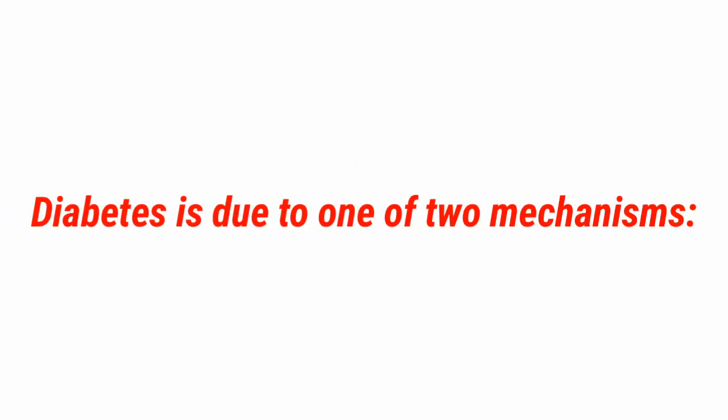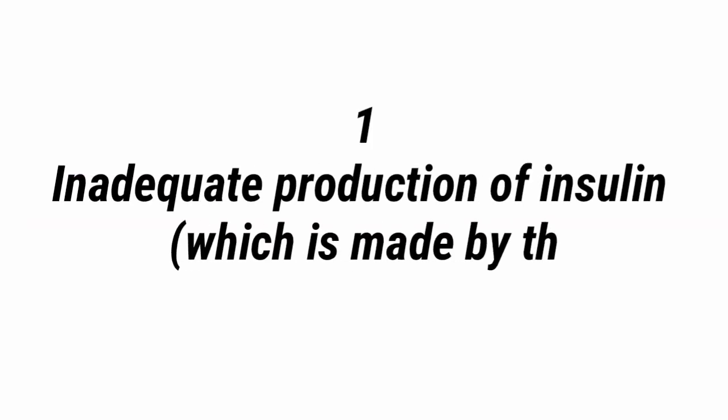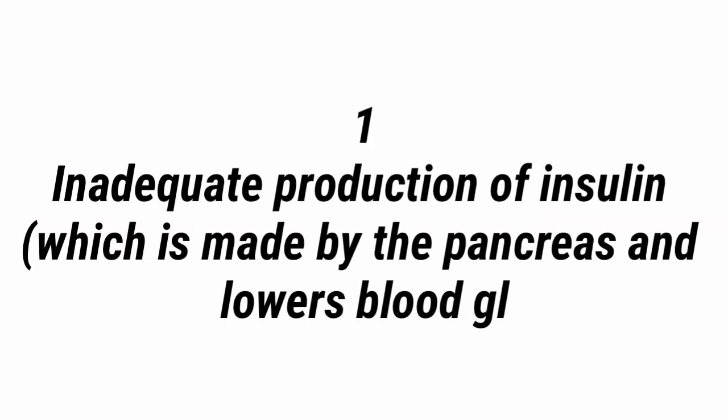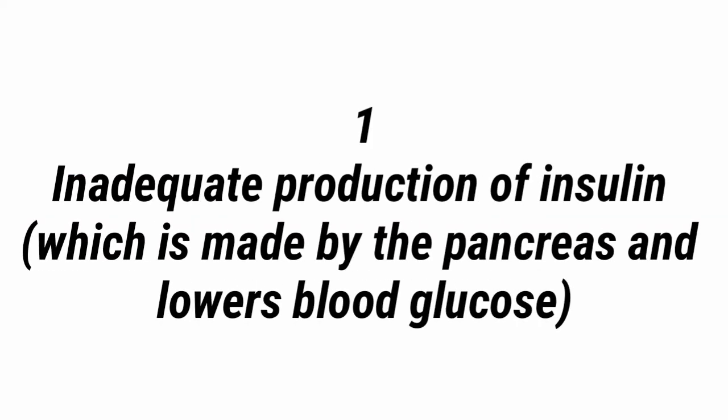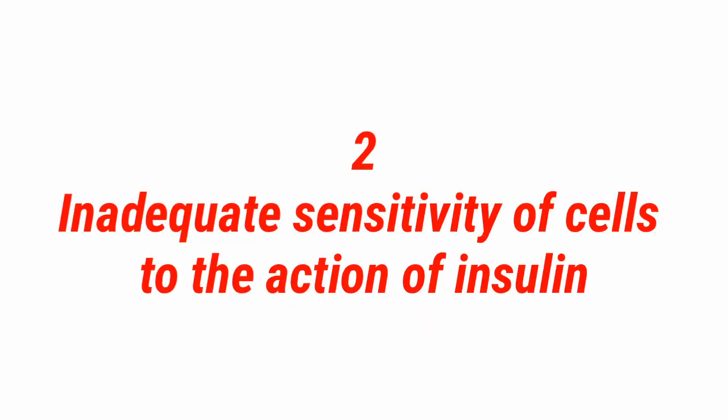Diabetes is due to one of two mechanisms. The first is the inadequate production of insulin, which is made by the pancreas and lowers blood glucose inside the body. The second is the inadequate sensitivity of the cells to the action of insulin.